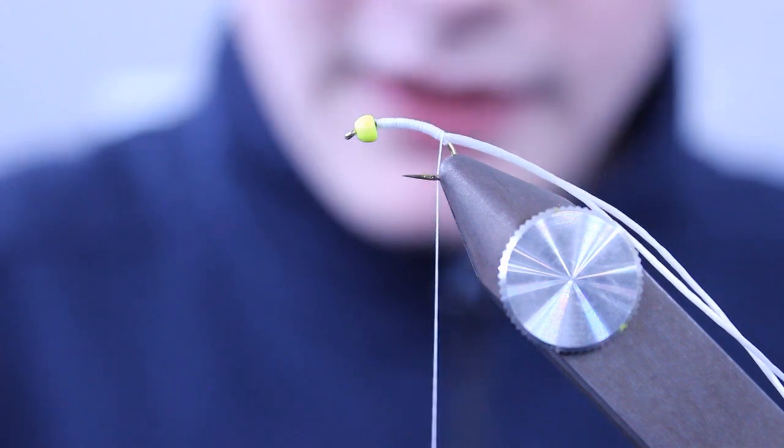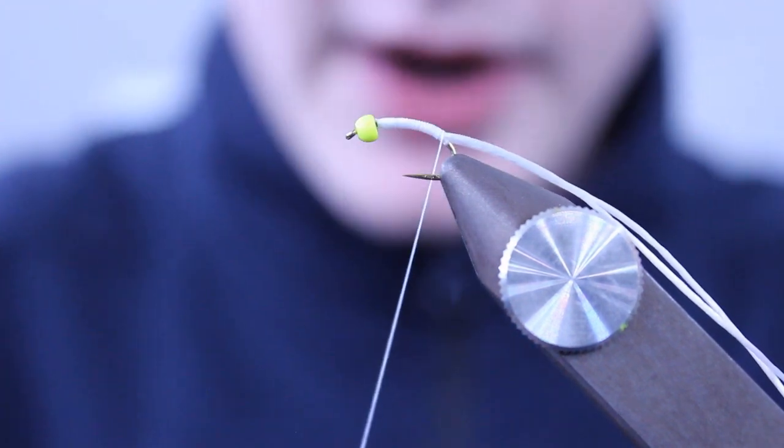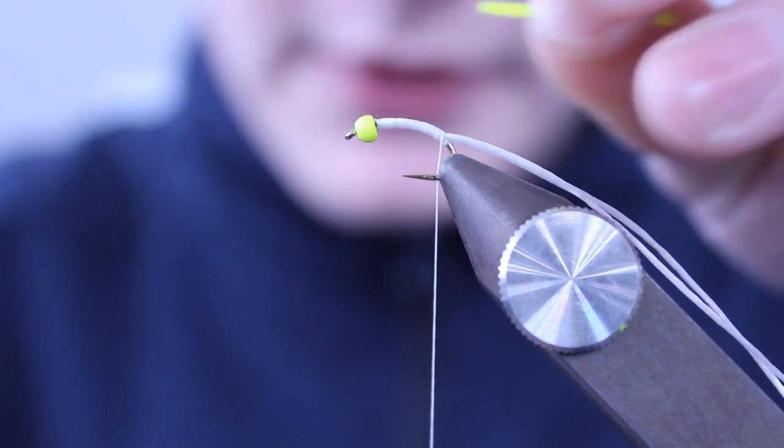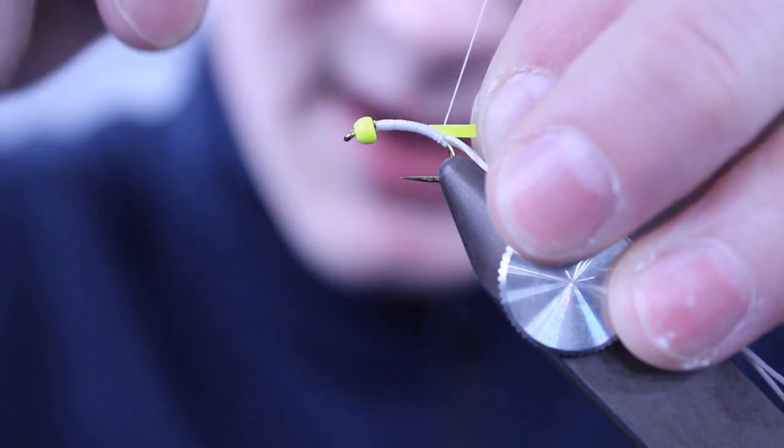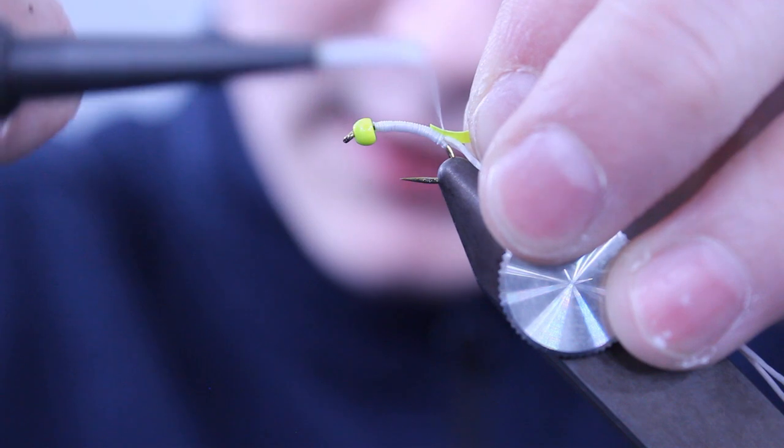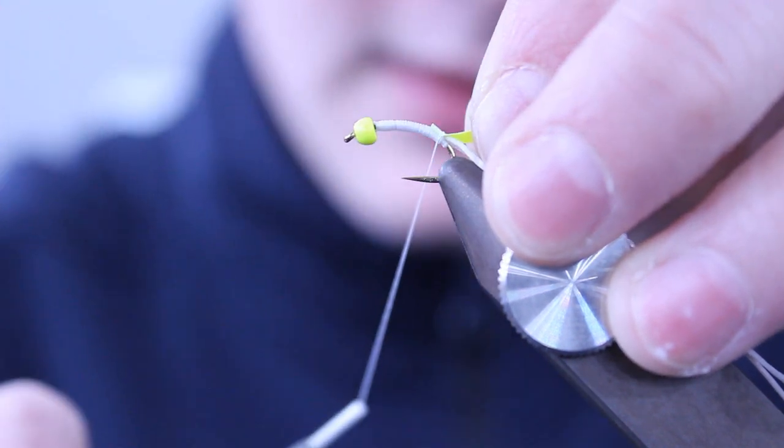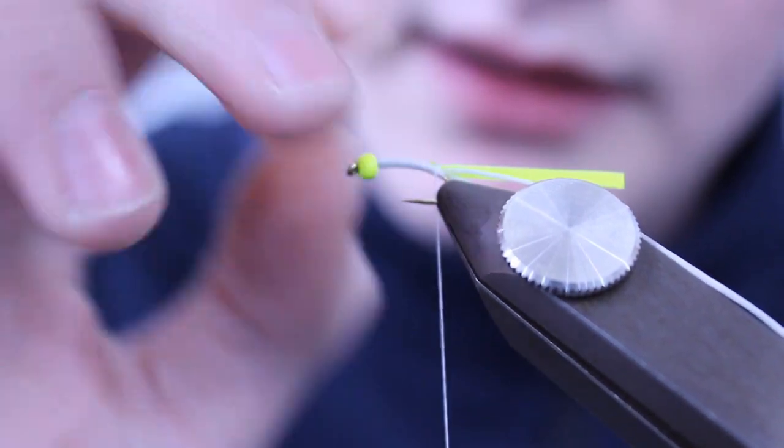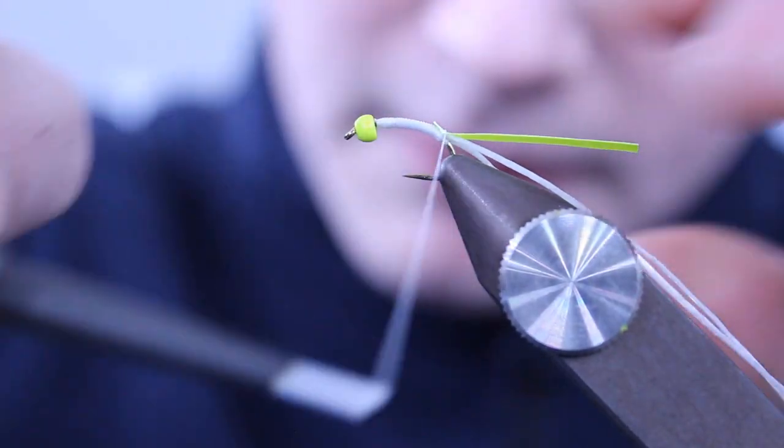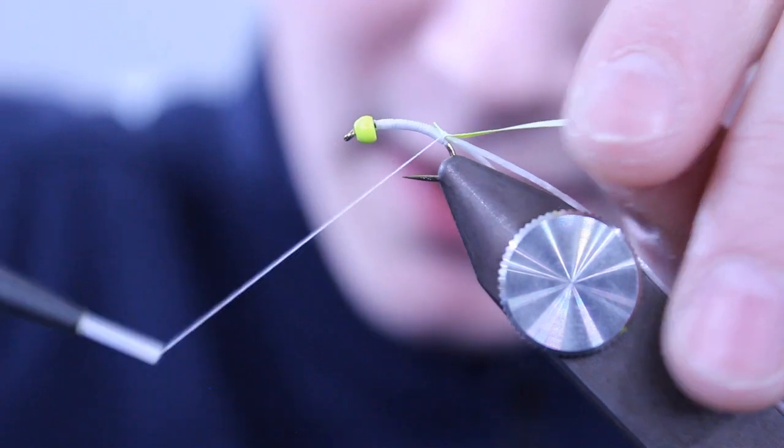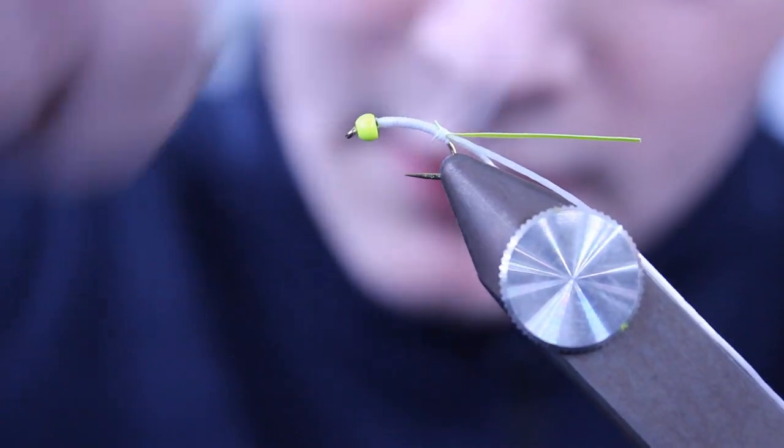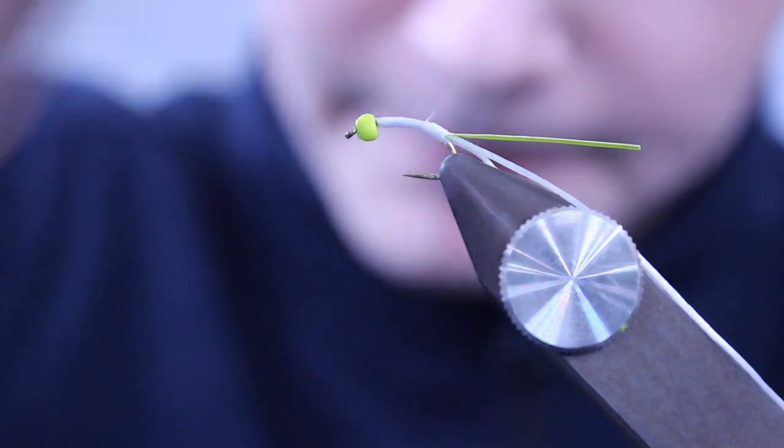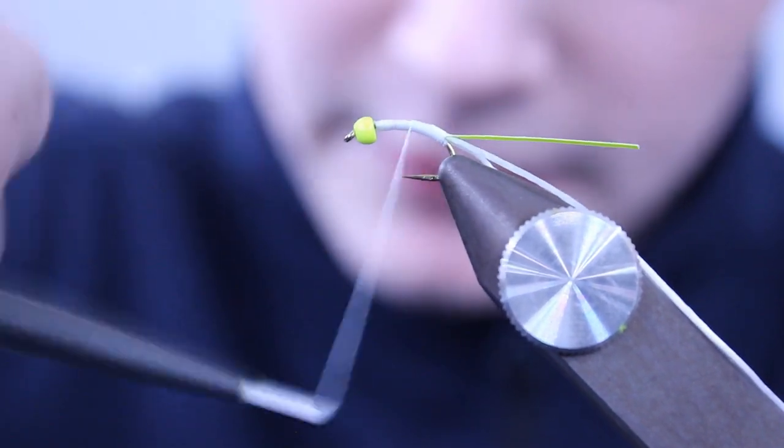For the back, I'm going to be using Sci-Buy-Stick Foil in fluorescent yellow. All I've done is cut a strip around a millimeter and a half to two millimeters in diameter. Tie it in on the back. Make sure it's straight. Take your touching turns back up the hook towards the bead.